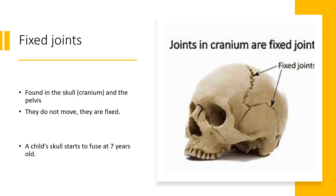Fixed joints are joints where there is no movement — hence the name, they are fixed in place. An example is the skull and the pelvis. The skull isn't originally fixed; the plates allow some movement for growth when babies are born, and they start to fuse around seven years old.